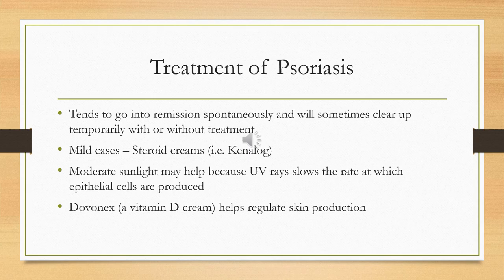For mild cases, you might use a steroid cream such as Kenalog. Sunlight — specifically UV rays — can be helpful. Dovonex, which is a vitamin D cream, can also help. Topical medications such as corticosteroids, coal tar preparations, or shampoos if the scalp is affected are common treatments. Tar preparations can come in forms for baths, topical applications, or shampoos.